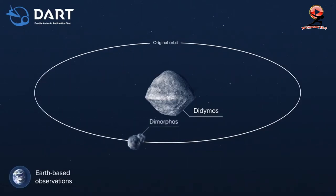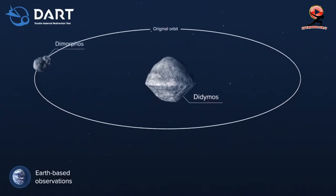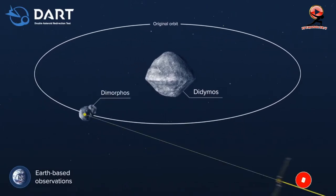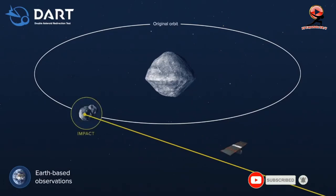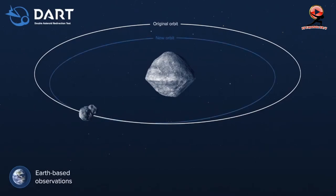A mission of firsts. Dimorphos was chosen for this mission because its size is relative to asteroids that could pose a threat to Earth, but the double asteroid system itself is not a threat to Earth. The spacecraft is about 100 times smaller than Dimorphos, so it won't obliterate the asteroid.